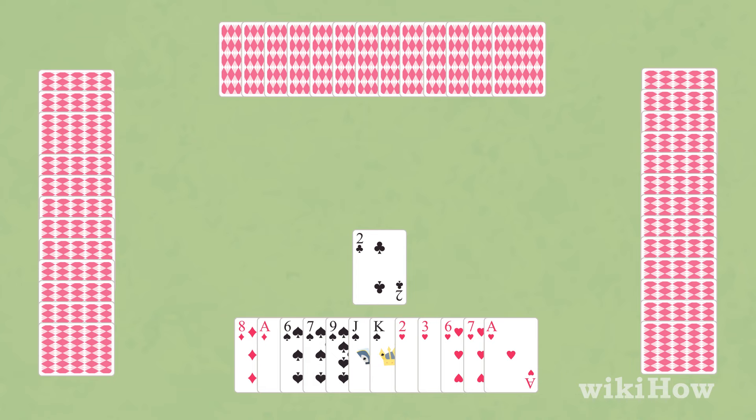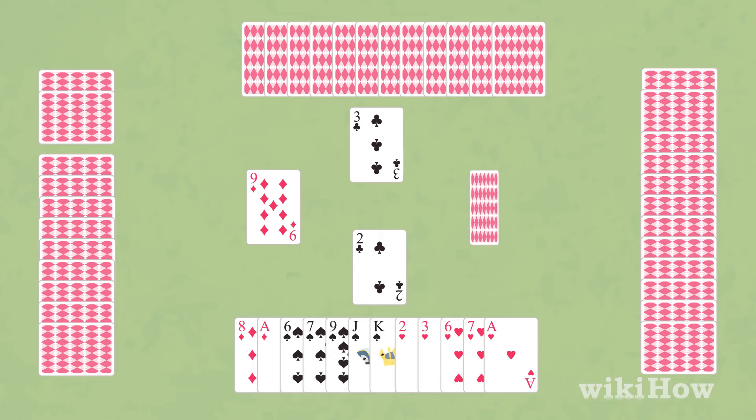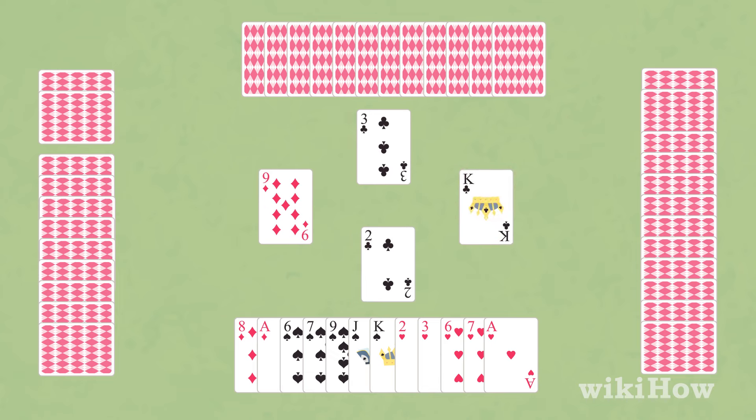The player to their left must follow with a card in the same suit if they have one. Otherwise, they can play any card in their hand. Once everyone's had a turn, the person who played the highest card in the suit that led wins the trick and collects all four cards.